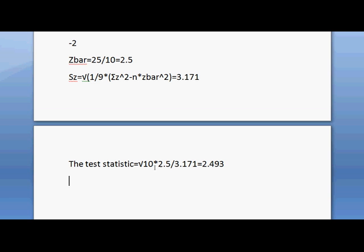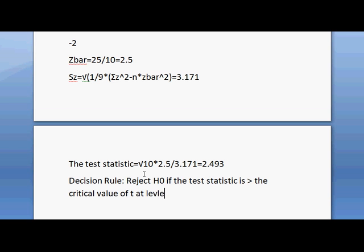Now let's compare this test statistic with the critical value of t. Decision rule: reject the null hypothesis H₀ if the test statistic is greater than the critical value of t at level of significance α = 0.05.